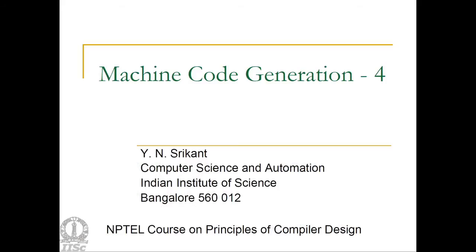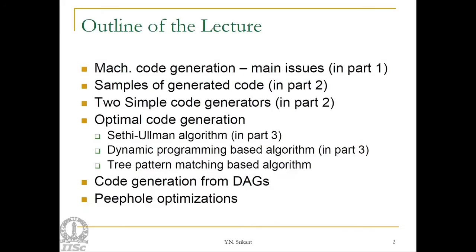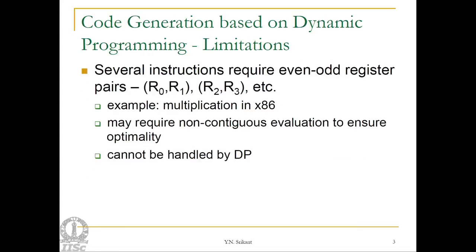Welcome to part 4 of the lecture on machine code generation. Today we will continue with our discussion on machine code generation, especially tree rewriting, code generation from directed acyclic graphs, and peephole optimization. First of all, let us see the difficulties, deficiencies, and limitations of the dynamic programming based code generation.